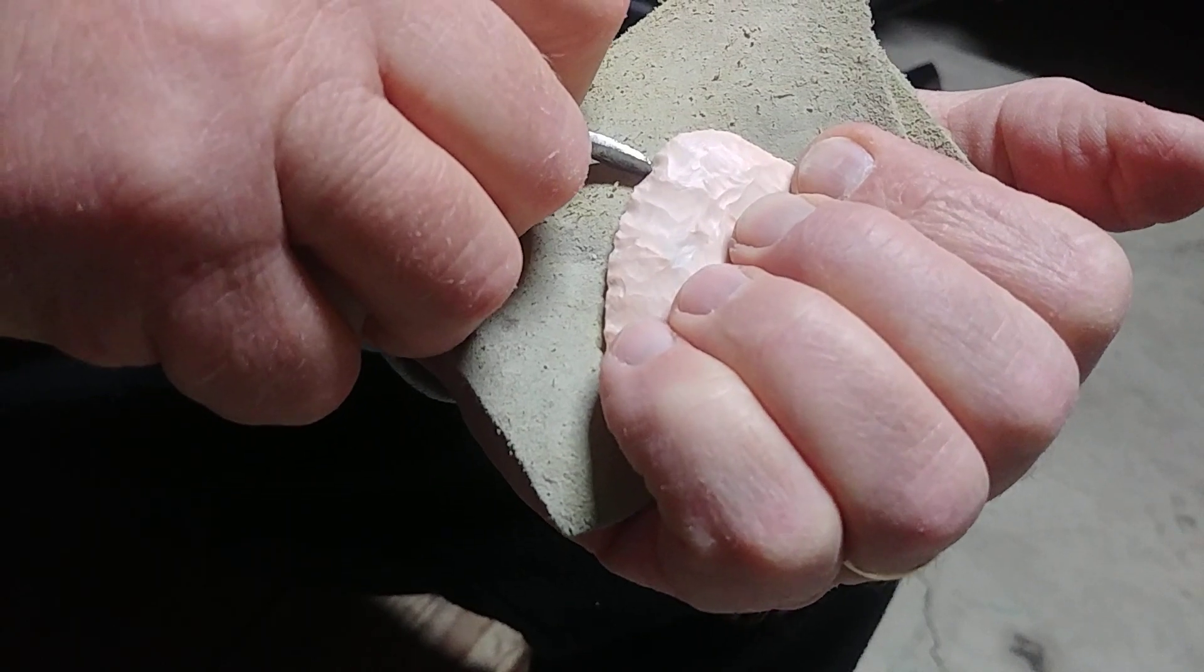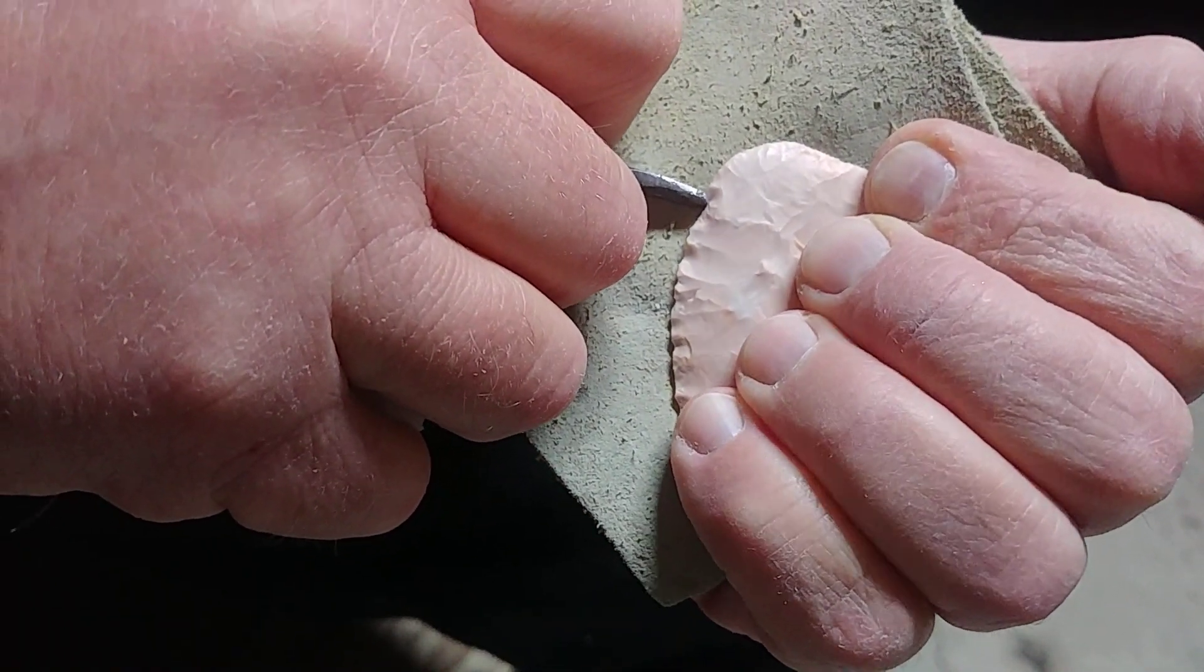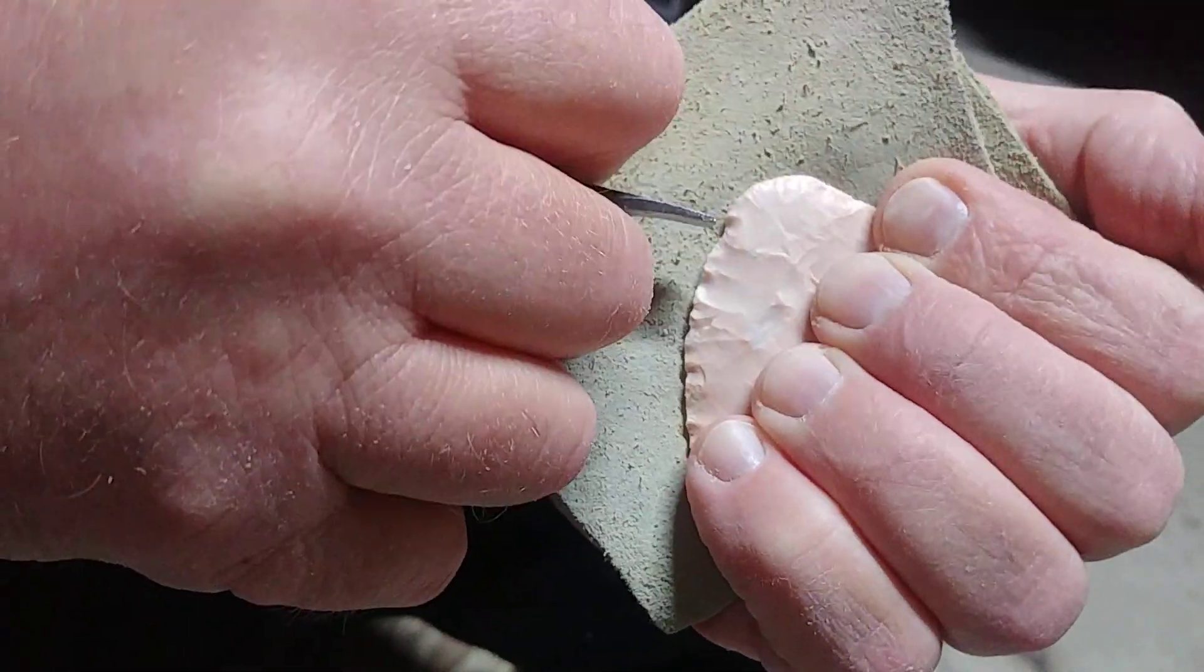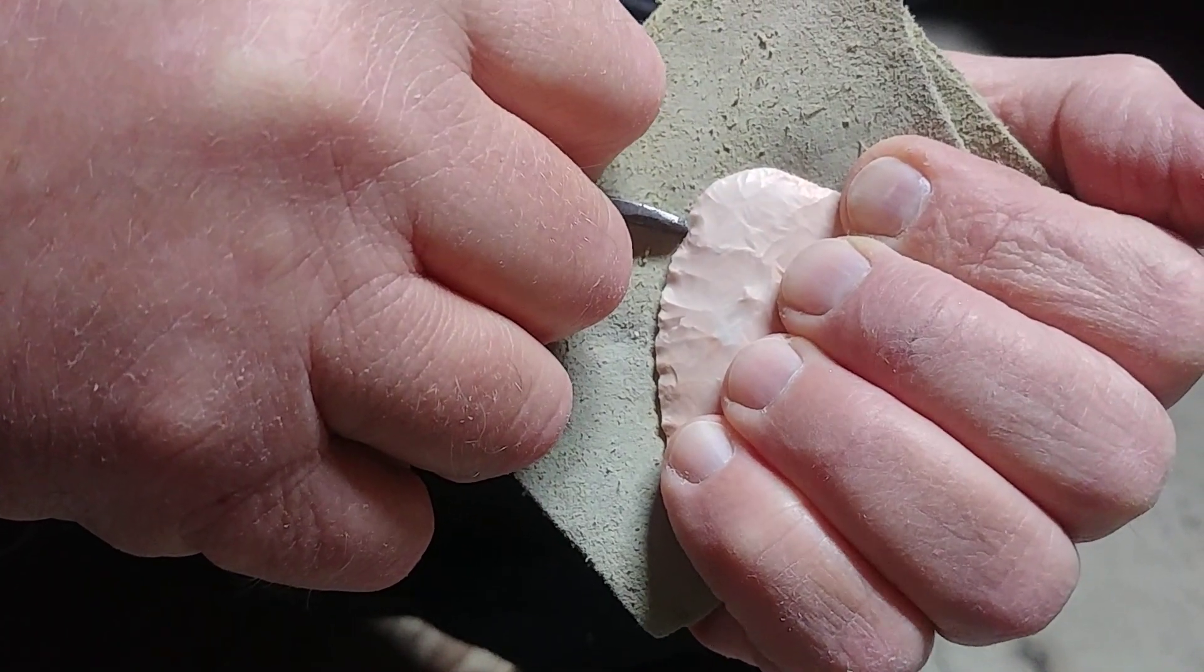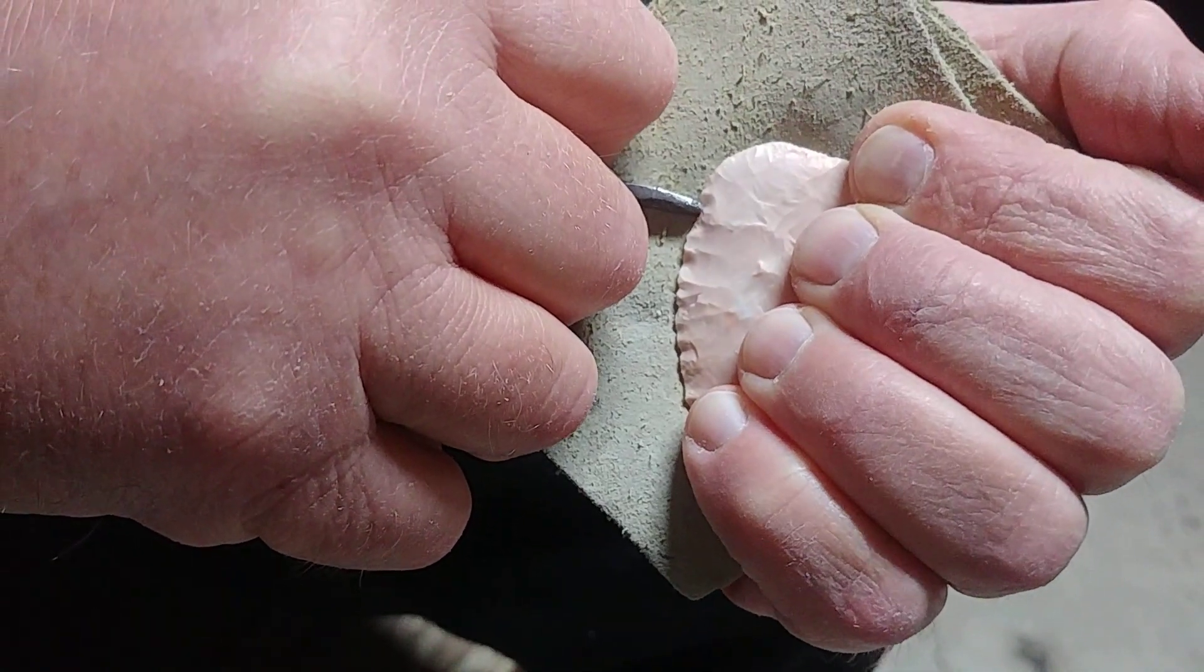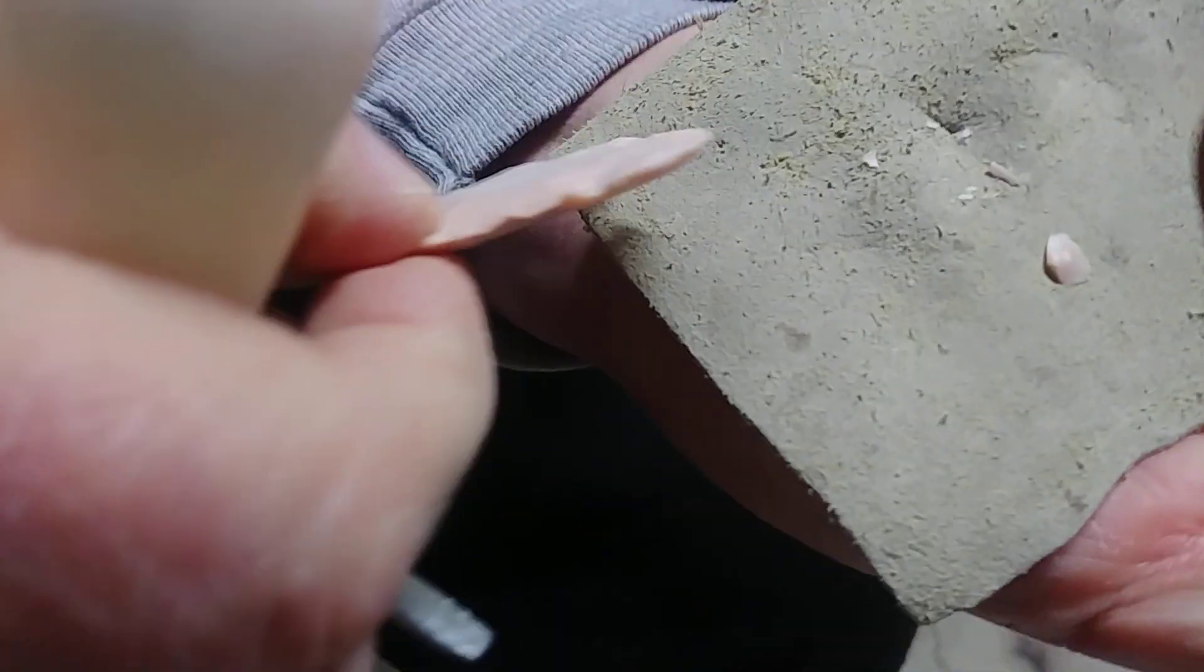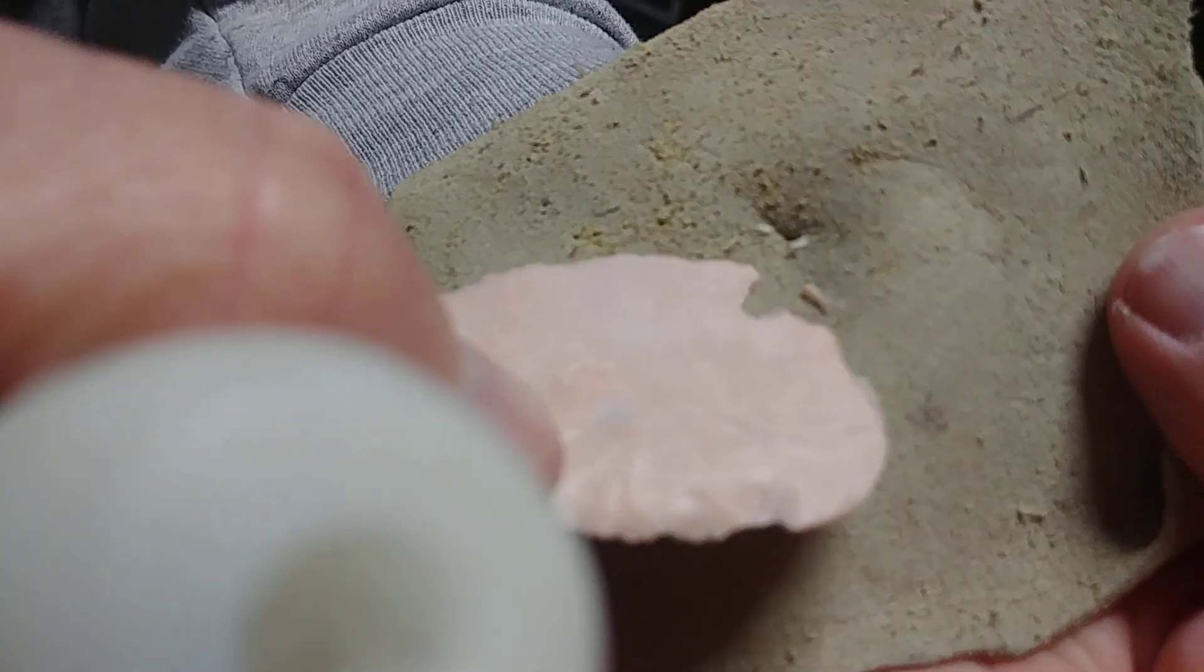And then come over, start at the bottom of the notch, and about a third up on the platform, not above the center line, or you're snapping in half. And then just kind of load up the pressure and push in, and it'll pop off the little C-flake.